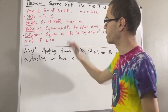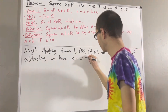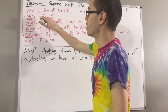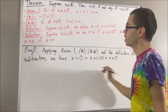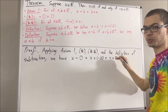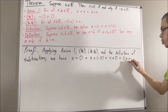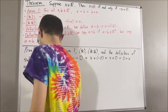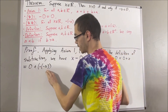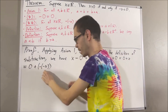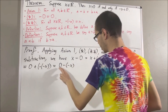To start, by definition of subtraction, x minus zero is equal to x plus the negative of zero. But then, since the negative of zero is equal to zero, we can replace the negative of zero with zero. But then, by axiom one, x plus zero is equal to zero plus x. But then, the negative of negative x is equal to x. So, by definition of subtraction again, zero plus the negative of negative x is equal to zero minus the negative of x. Through this chain of equalities, we have shown that x minus zero is equal to zero minus the negative of x.